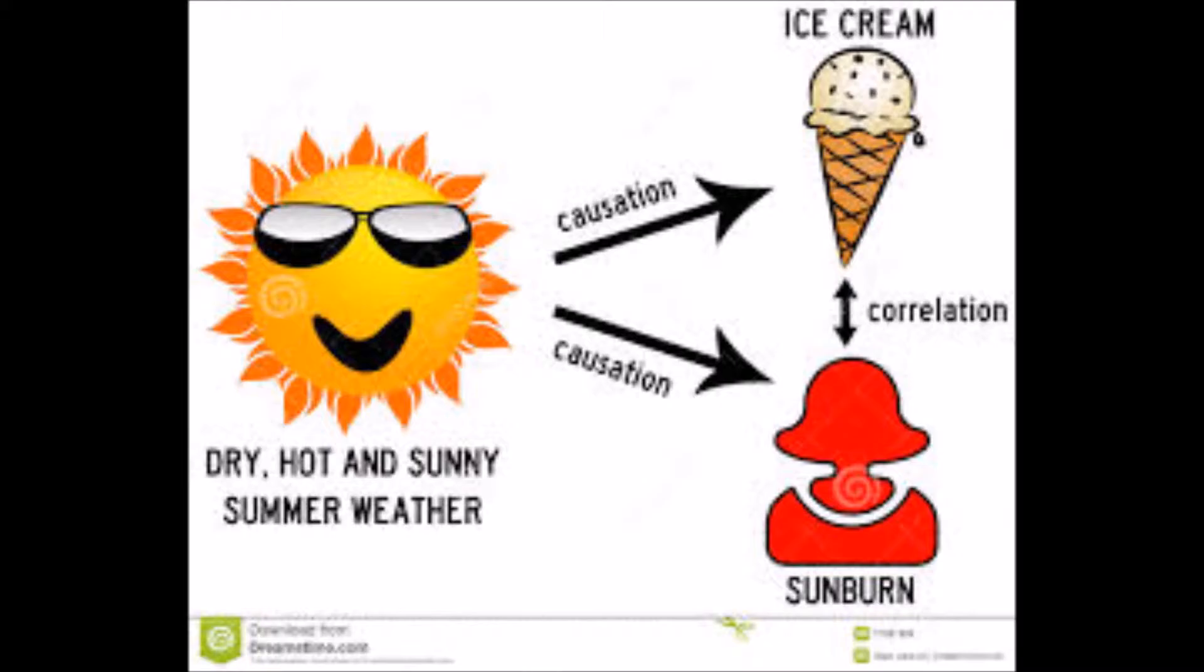Want to talk about the concept of correlation and causation. Causation means that one thing causes another thing to happen, and correlation means that two things that are happening either happen going in the same direction or happen going in opposite directions, or have nothing to do with each other whatsoever.